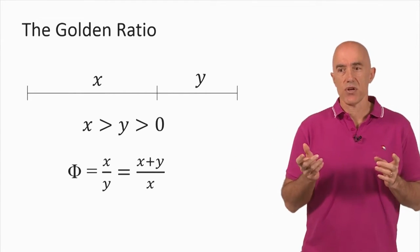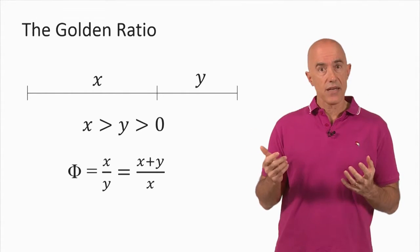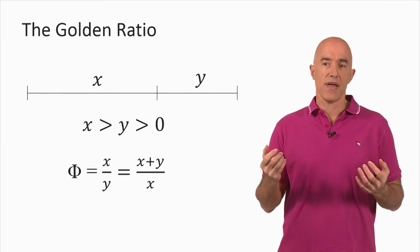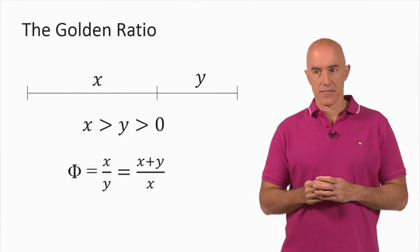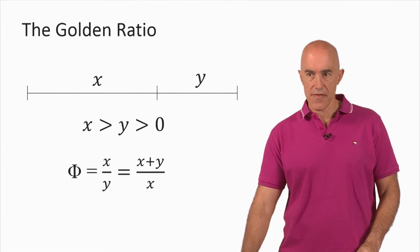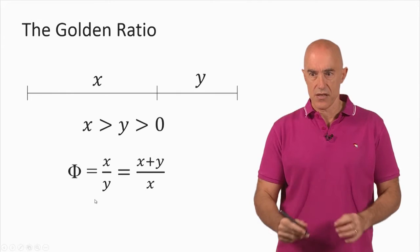So golden ratio are these ratios X over Y or X plus Y over X, but we require that X over Y equals X plus Y over X. So we can do some mathematics on this equation.